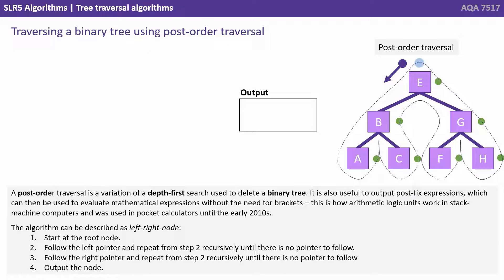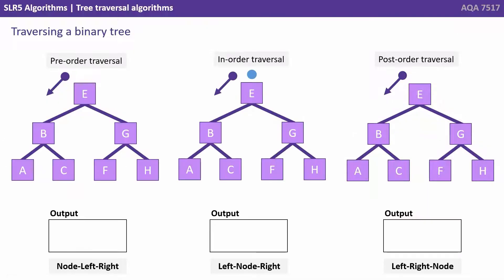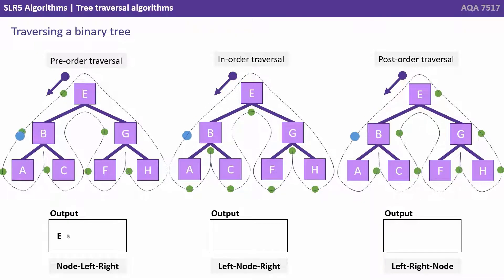Finally, we have post-order traversal. Note that we put the little green markers on the right-hand side of each node. A post-order traversal is a variation of a depth first search used to delete a binary tree. It's also useful to output post-fix expressions, which can be used to evaluate mathematical expressions without the need for brackets. This is how arithmetic logic units work in stack machine computers, and was used in pocket calculators until the early 2010s. The algorithm is described as left-right-node. We start at the root node, follow the left pointer recursively until there's no pointer to follow, follow the right pointer recursively until there's no pointer to follow, and then output the node. Here is a summary showing the three traversal methods, where to place the markers, and the output given by each.